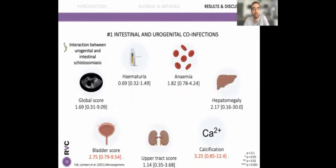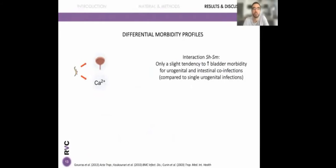When looking at the impact of co-infections, we only had a small tendency toward increased bladder lesions and bladder wall calcifications when both urogenital and intestinal schistosomiasis were present. However, this was not statistically significant. Nonetheless, we found this slight tendency of increased bladder morbidity for co-infections compared to single urogenital infections, which is consistent with previous studies. The small effect was probably due to the low prevalence of Schistosoma mansoni in our study and its presence in only one study site.